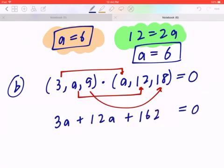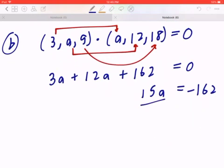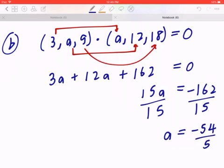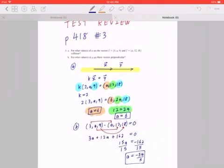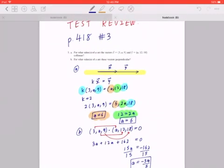If you collect like terms, 3 plus 12 is going to be 15, so 15a. You can bring 162 to the right, that becomes negative 162. The opposite of multiplying by 15 is to divide by 15. So a equals negative 54 divided by 5. I hope this makes sense.